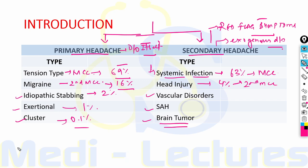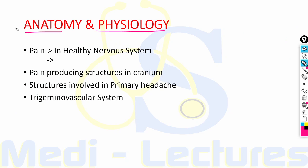It is important to note that life-threatening headache is very uncommon, but due vigilance is required in order to recognize and appropriately treat such patients. When we consider the anatomy and physiology of headache, it can be due to a healthy nervous system or unhealthy nervous system.